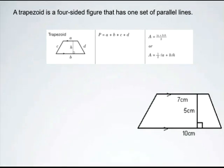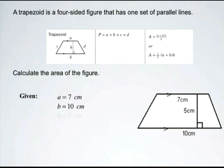The formula to calculate the area of a trapezoid is first by taking the sum of the parallel sides and multiplying that by the height and then dividing by 2. So let's try to calculate the area of the figure on the right hand side. Our givens are side A at 7 centimeters, side B at 10 centimeters, and the height at 5 centimeters.